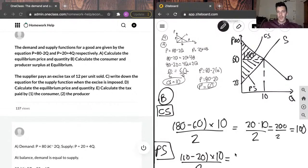Here, I use a dot and an X for multiplication interchangeably. Probably bad practice. You should probably use one or the other, but I digress. 40 times 10 is 400 over 2. And our producer surplus is going to be 200.